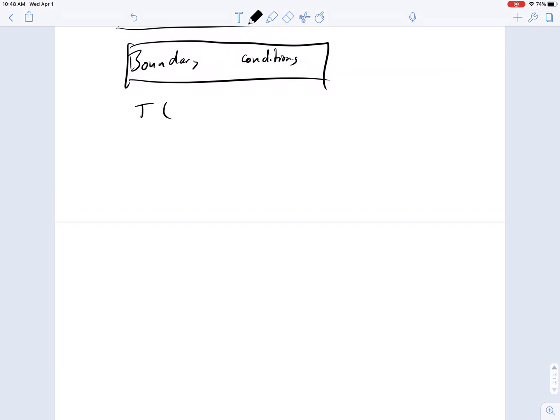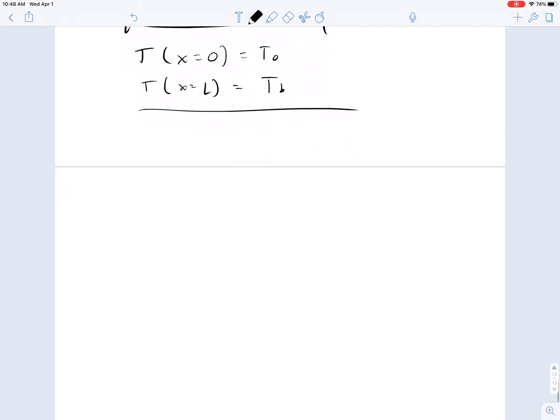We covered one in our example problem so far. Temperature at x equals zero equals T zero. Temperature at x equals L is equal to some TB or T1 or T2. There's other types of things.